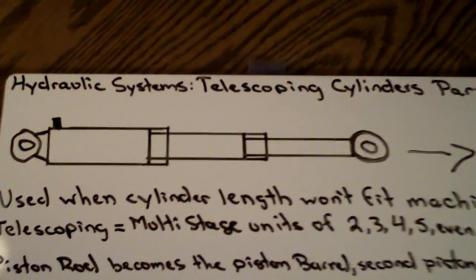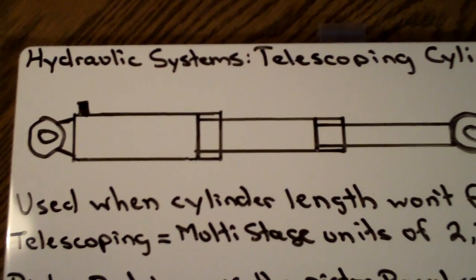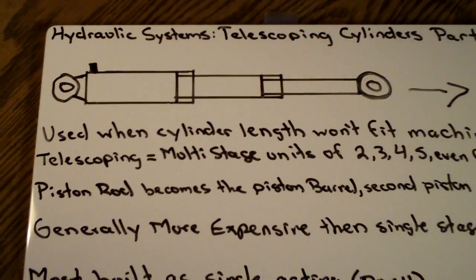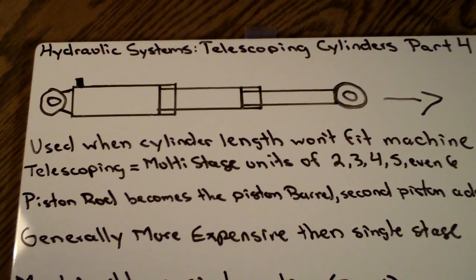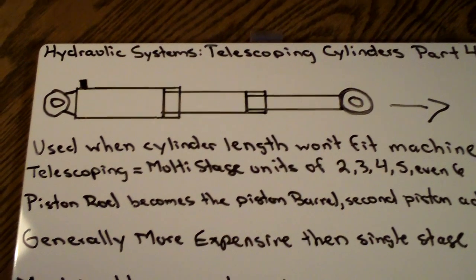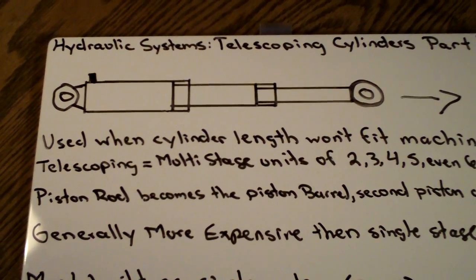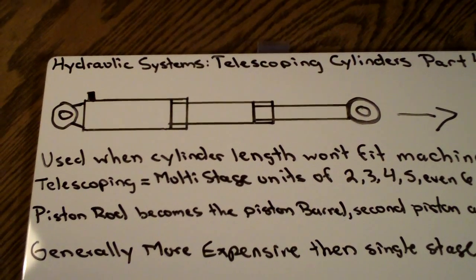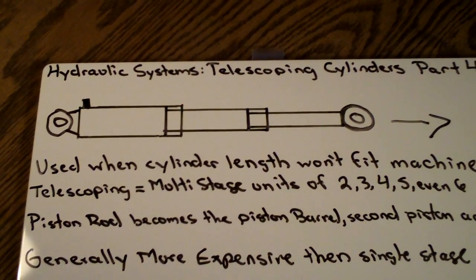Now here at the top I've got a basic telescoping cylinder drawn out. Basically, telescoping cylinders are used when a regular single-stage cylinder just physically will not fit in the machine. A telescoping cylinder is a multi-stage cylinder with 2, 3, 4, 5, and even up to 6 units that are added onto it.